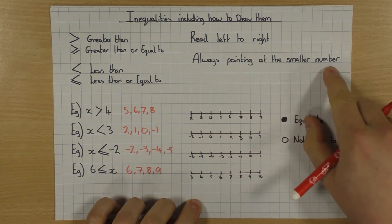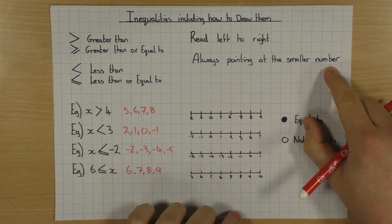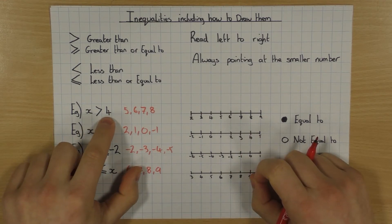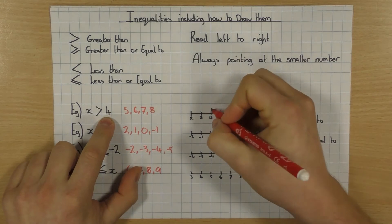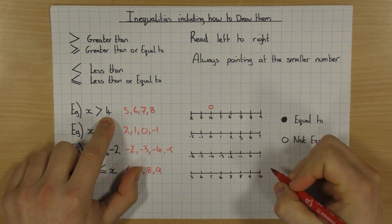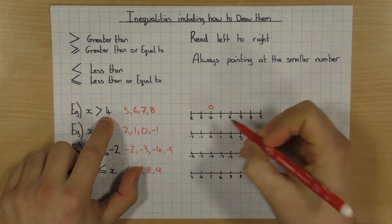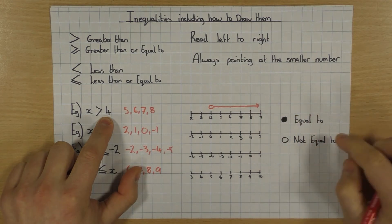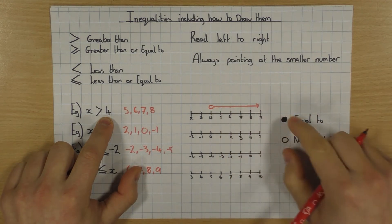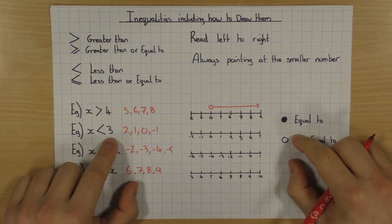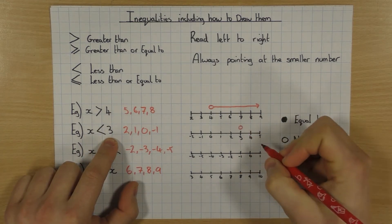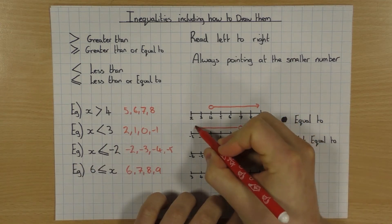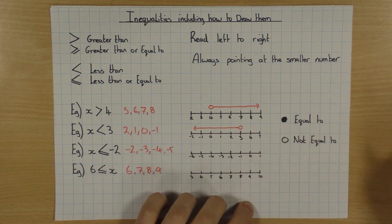As long as you remember you're always pointing at a smaller number, you should always get it the correct way round. So how we draw them is like so. If we've got the number 4, the first thing to do is to put a circle over 4. And now x is bigger than 4, so when you've got your number line, if x is bigger, we draw an arrow going up the number line to show that it is bigger than 4. Same thing for here — we put a little circle on 3, and this time x was less than, so we put an arrow going down the number line to show that it was less than 3.